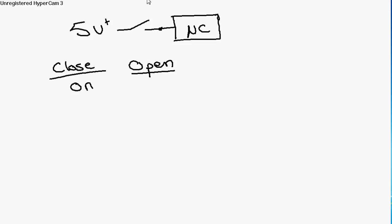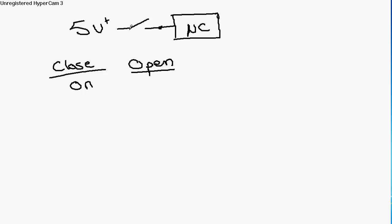But what happens if you leave the switch open? As I described earlier, there's on, there's off, and there's disconnected. It's not on, because it's no longer connected to the high voltage. It's not low, because there's no path to ground. So, by process of elimination, when it's open, that must mean it's floating.